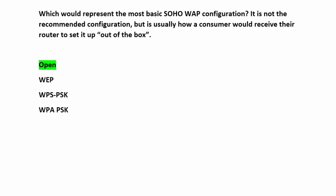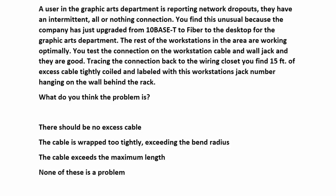Many are close if you deductively reason away the junk. Here's your next question: A user in the graphics art department is reporting network dropouts — they have an intermittent, all-or-nothing connection. You find this unusual because the company just upgraded from 10BaseT to fiber to the desktop for the graphics art department, and the rest of the workstations in the area are working optimally. You test the connection on the workstation, cable, and wall jack — they're all good. Tracing the connection back to the wiring closet, you find 15 feet of excess cable tightly coiled and labeled with the workstation's jack number hanging on the wall behind the rack. What do you think the problem is?